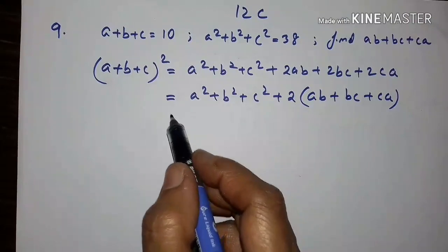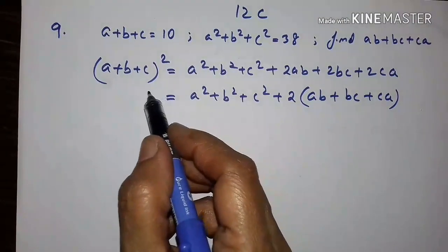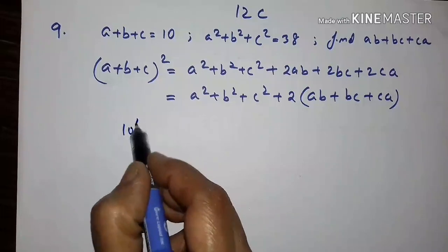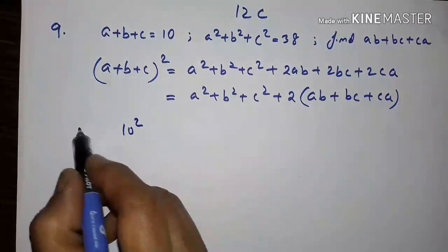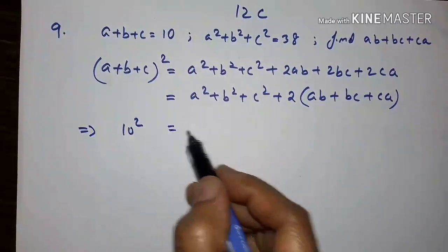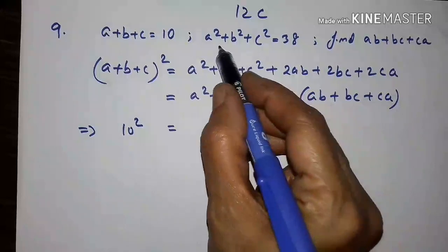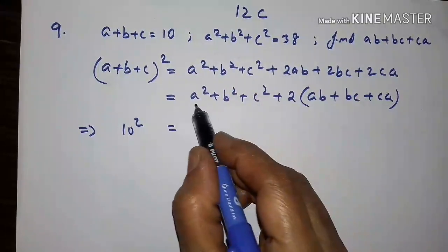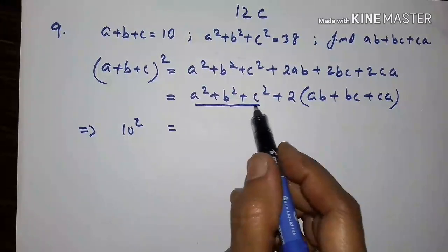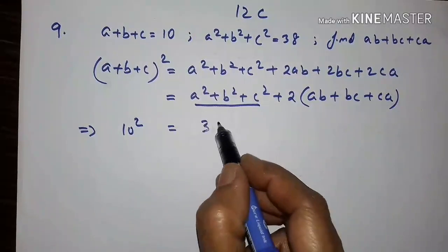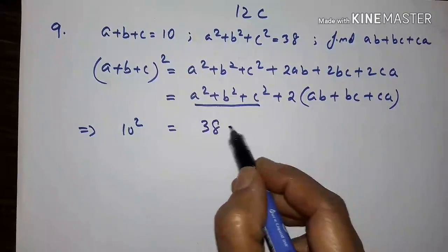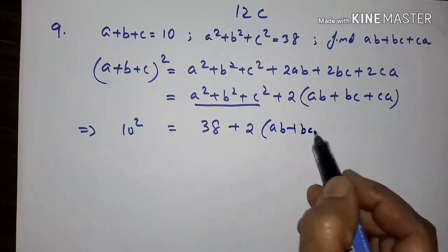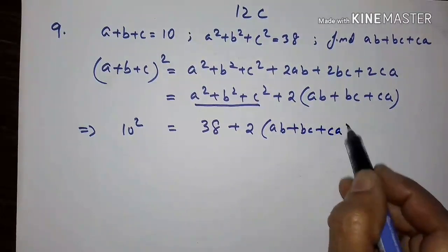Now let us substitute. a plus b plus c is 10, so 10 squared equals a squared plus b squared plus c squared, which is 38, plus 2 into (ab plus bc plus ca).